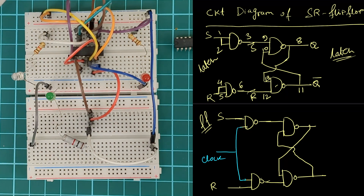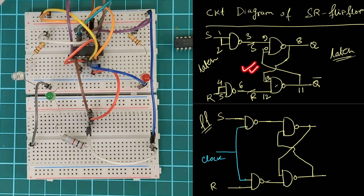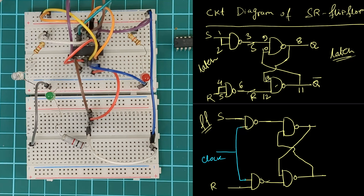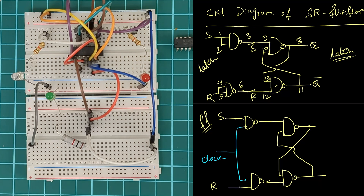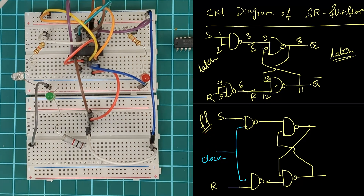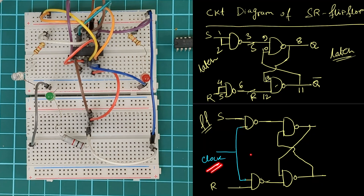In our last video, we showed you how to make an SR latch using NAND gates, and after that we showed how to convert this SR latch to an SR flip-flop. The difference between an SR latch and a flip-flop is that in the SR latch we don't have any clock — so we also call the SR latch a 'without clock SR flip-flop.' The SR flip-flop means we have a clock pulse. So we converted the SR latch to an SR flip-flop by adding a clock pulse.